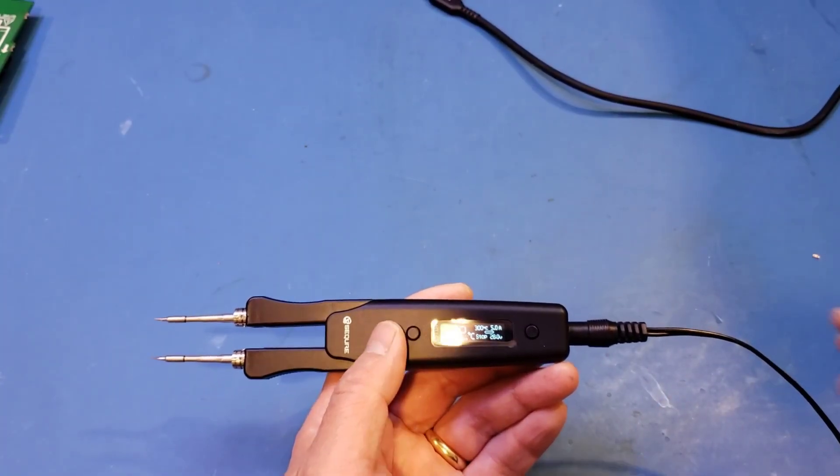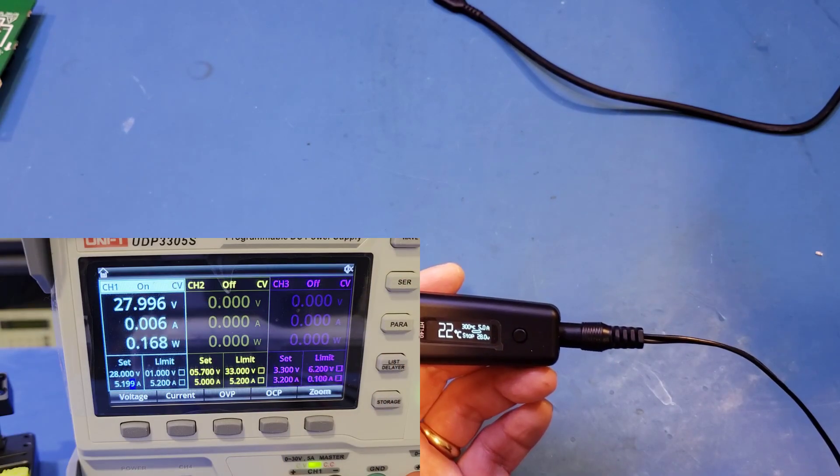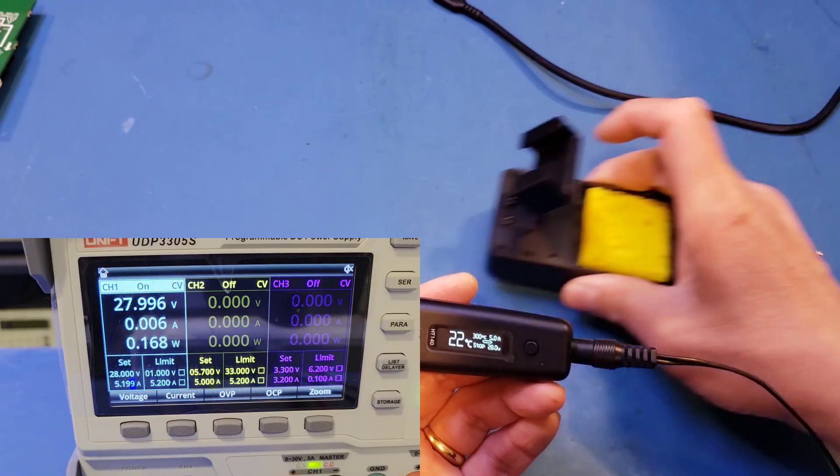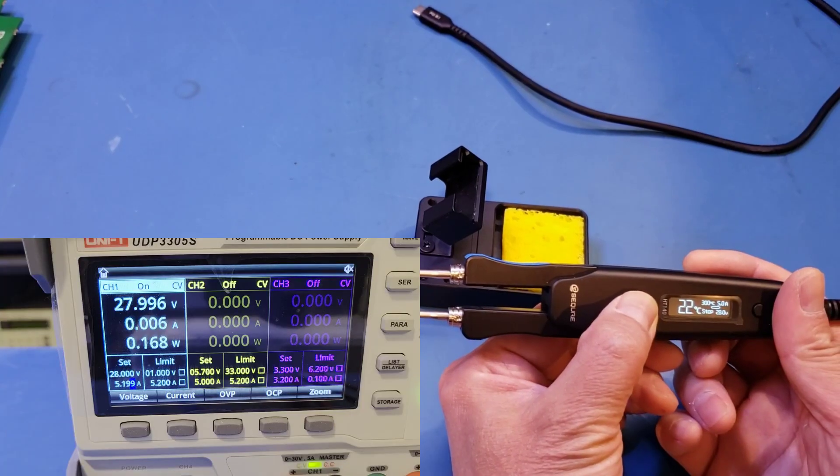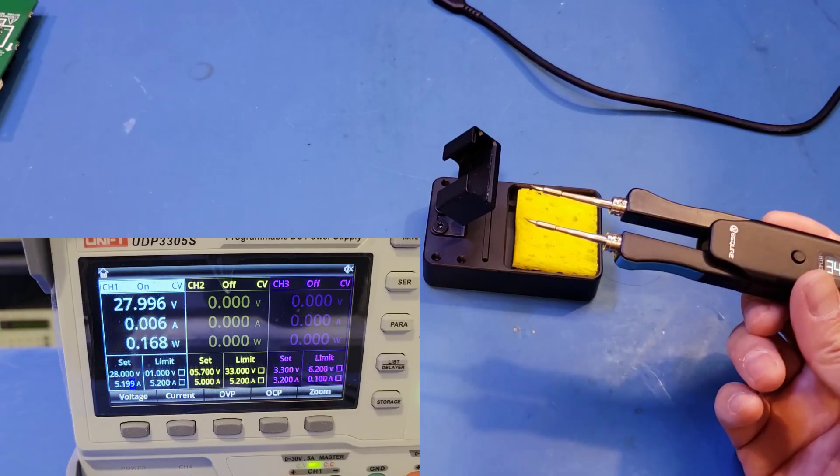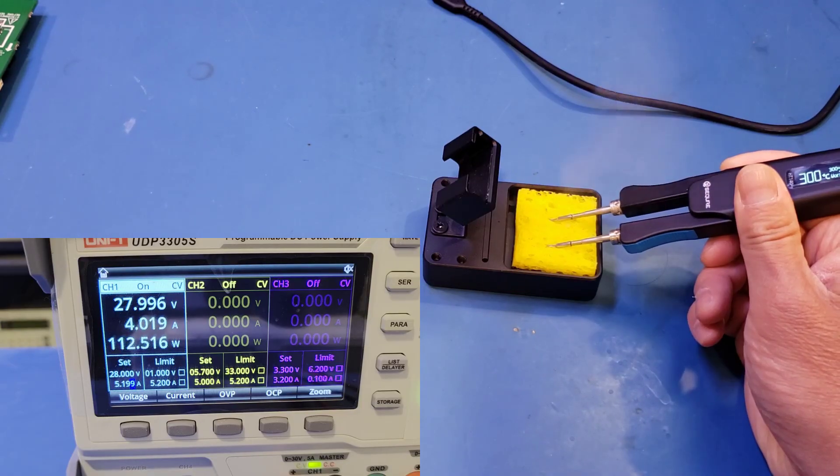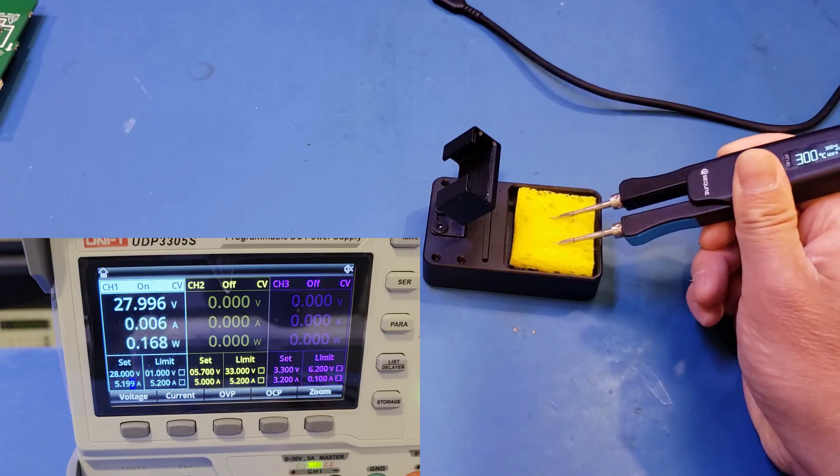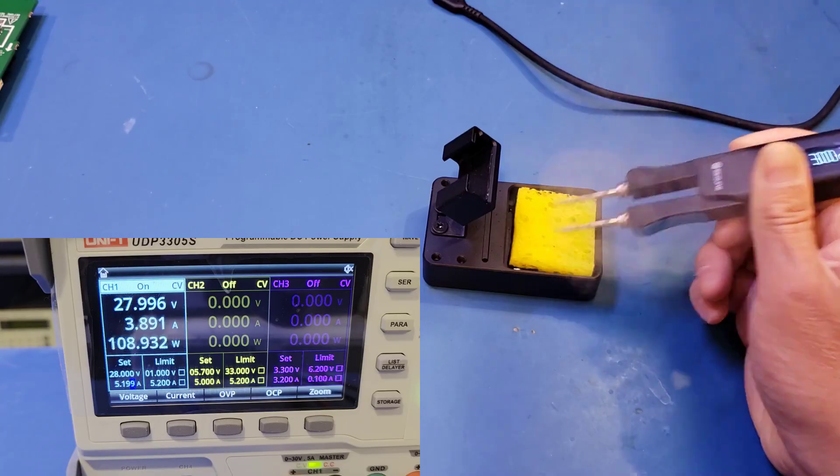To test the maximum power setting, I have changed it to the barrel jack connected to my Unity UDP 3305S, as you can see on the other display here. So let me actually try to power it on to see how much power we're drawing here. You can see that briefly it drew about 140 watts. Let me cool down the tips. And you can see that we're consistently drawing more than 100 watts. So definitely the maximum power rating is accurate.